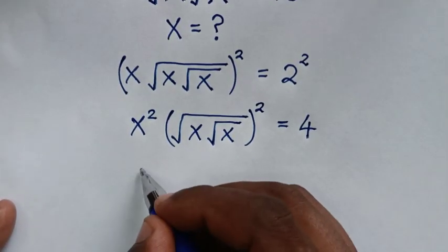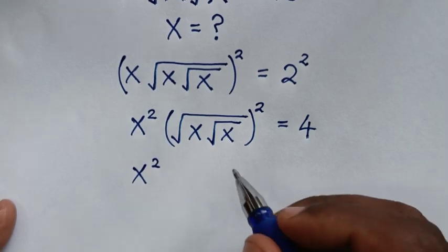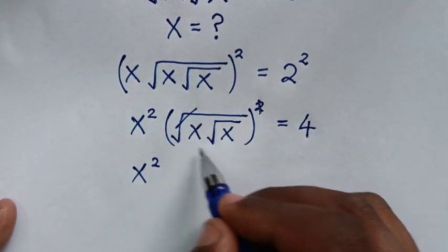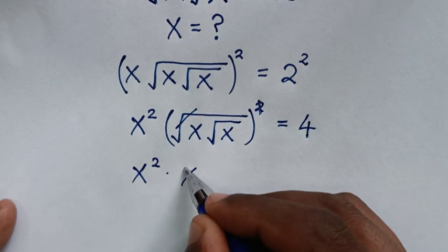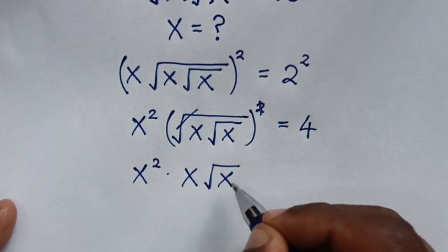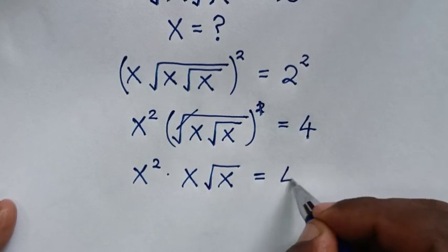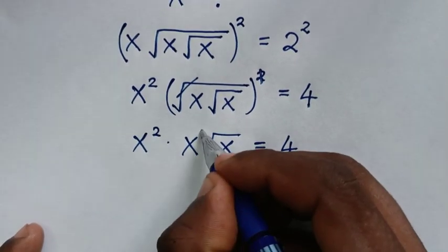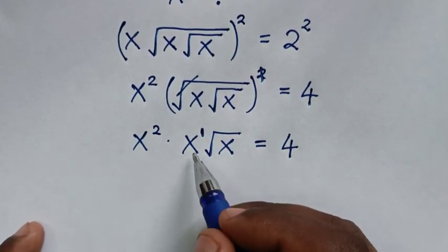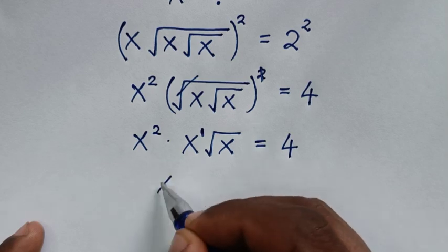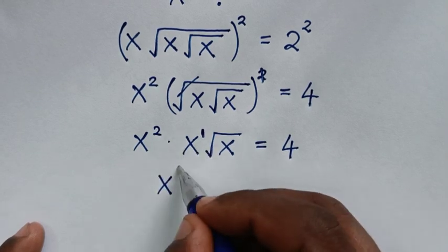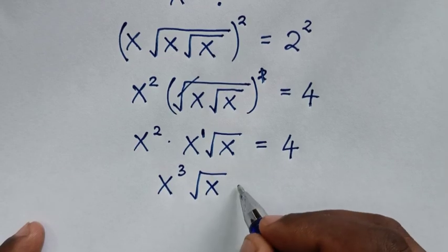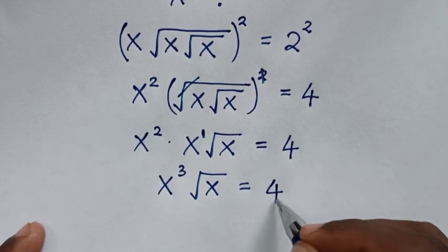Then in the next step, the square will cancel with the square root, so it will be x squared times x square root of x is equal to 4. Now this x is the same as x power of 1, so x power of 2 times x power of 1 is x power of 3, then times square root of x is equal to 4.